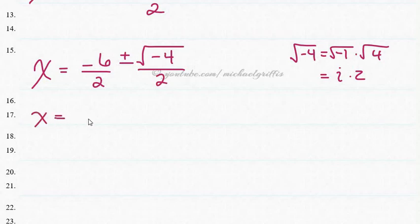So we have x is equal to negative 3 plus or minus—so this is going to become 2i. Okay, whoops. No, that's right. I already did 2, already reduced that, didn't I? Okay, and this is over 2.